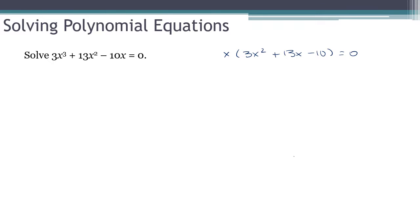And now I think this quadratic part is going to factor. This will be 3x, and I'm thinking plus 5 and minus 2 equals zero. Let's see, 15 minus 2. Yeah, that's 13. Good.